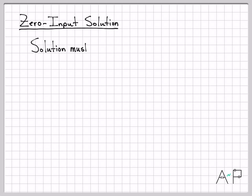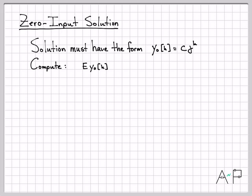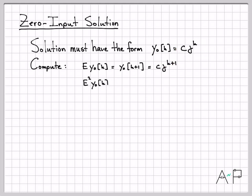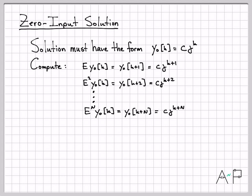Now that we know the solution must be an exponential of the form c·γ^k, let's plug it into the difference equation. The operator E applied to y₀(k) gives y₀(k+1), which for our guess becomes c·γ^(k+1). E² applied gives c·γ^(k+2), and so on for every term in the difference equation. We compute all those time-advanced versions of our guess and prepare to substitute them back into the original difference equation.